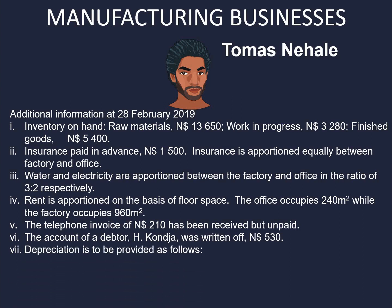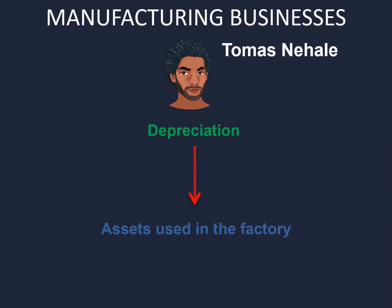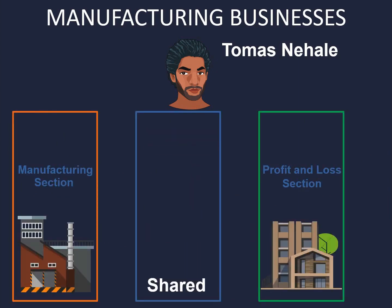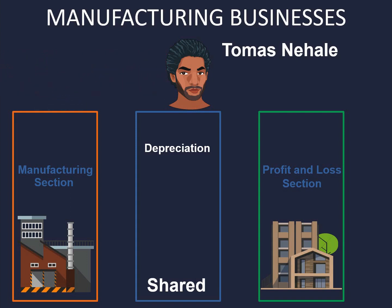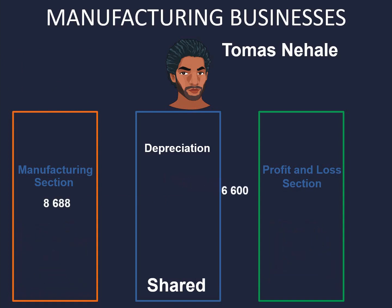Depreciation is to be provided as follows: equipment at 20% diminishing balance method, and vehicles at 15% fixed amount method. The depreciation for equipment: the cost price is 54,300 less the provision for depreciation of 10,860, multiplied by 20%, giving a depreciation amount of 8,688. For vehicles, the cost price is 44,000 at 15%, giving an answer of 6,600. Depreciation for equipment will go in the manufacturing section, and depreciation for vehicles will go in the profit and loss section.